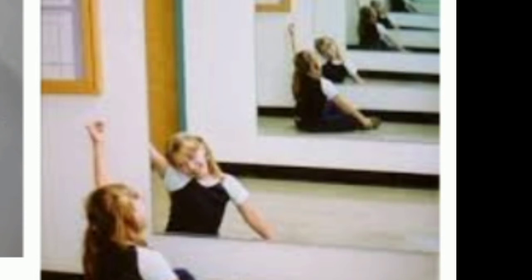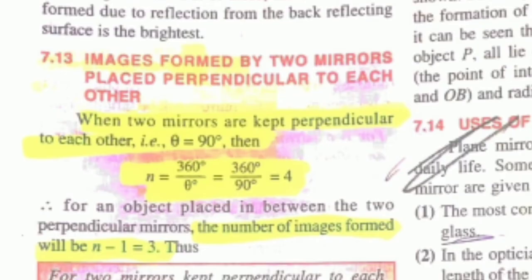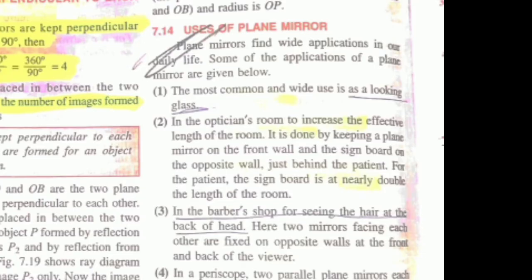Images formed by two mirrors placed perpendicular to each other: when two mirrors are kept perpendicular to each other, that is theta equals 90 degrees, then n equals 360 divided by 90 equals 4. For an object placed between the two perpendicular mirrors, the number of images formed will be n minus 1 equals 3.